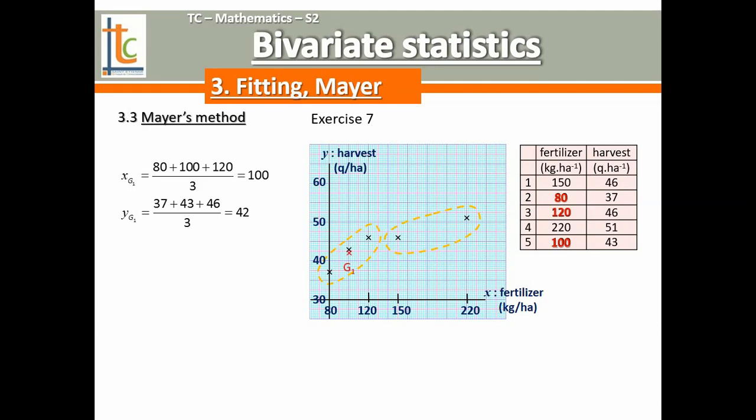And then we can calculate G2, thanks to the 2 remaining points, 150 and 220 for X, and 46 and 51 for Y. The average values being 185 and 48.5.